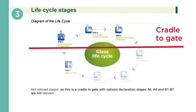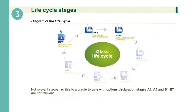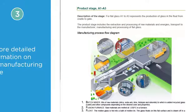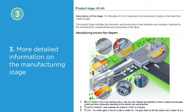It does not therefore include transport, transformation, use, and end of life of the glazing. This is very common for glazing as it's impossible to determine in advance the exact life cycle of the sheets of glass produced by our factories, and also because the manufacturing stage represents the most important part of the impacts. Three: more detailed information on the manufacturing stage — a description of each of the industrial processes necessary to manufacture the product and included in the LCA.